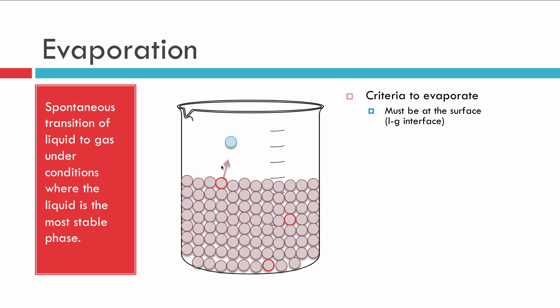Those other two molecules are not going to be able to evaporate. What else might be a condition to evaporate besides being at the interface? The molecules inside the container that are liquid are held together with intermolecular forces. Those intermolecular forces have to be broken to become a gas, because in the gas phase those forces barely interact with the molecules and don't hold them close together. Therefore, we must have enough energy to break our intermolecular forces.